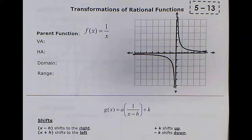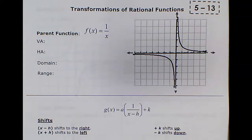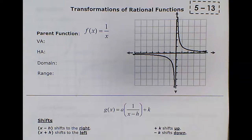Today we're going to talk about transformations of rational functions. We already talked about it a little bit in the last set of notes, where in order to transform your rational functions, you shift around the asymptotes. We're going to officially discuss those transformations, and instead of just talking about shifting, we're going to also include vertical stretches.